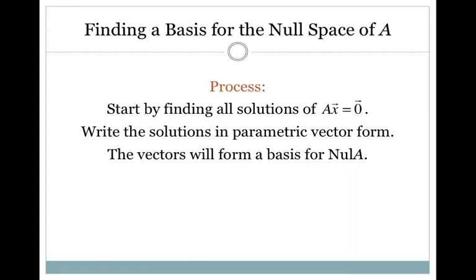Now let's go one step further and find a basis for the null space of A. This means finding a linearly independent set of vectors that spans all the solutions of AX equals zero. The process is to start by finding all solutions of AX equals zero — this is by definition the null space — then write the solutions in parametric vector form, and those vectors will form a basis for the null space of A.